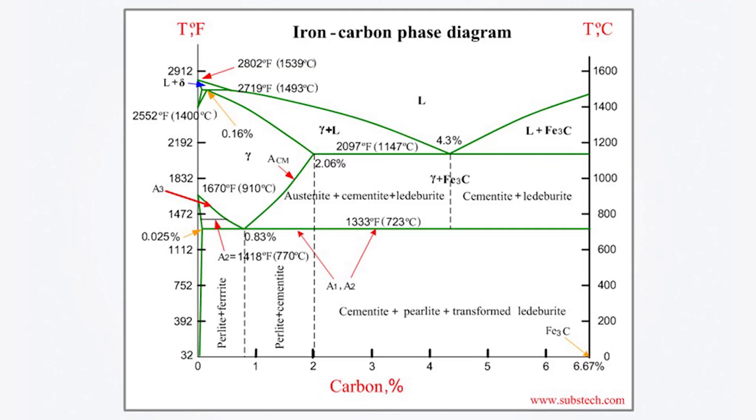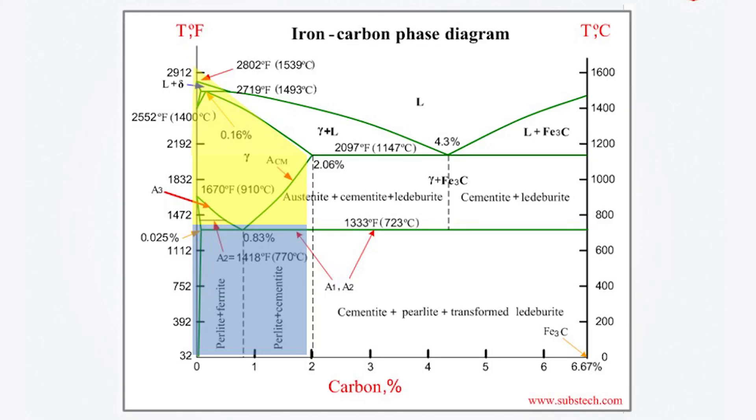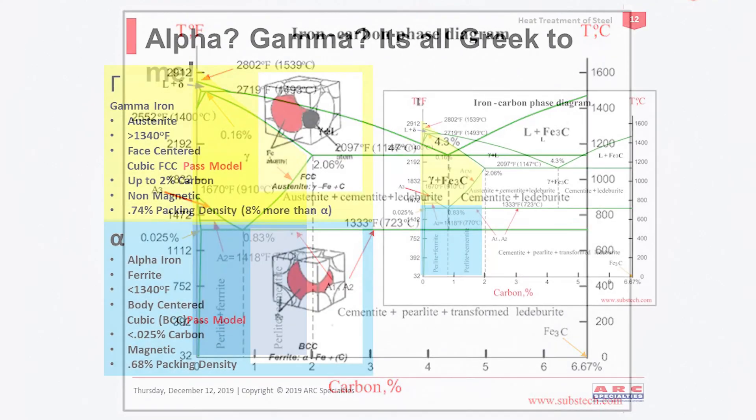This is an iron-carbon phase diagram. Along the x-axis, you have the carbon percentage, zero to about seven percent. And along the y-axis, we have temperature. What it's showing you is that at different temperatures, we have different patterns of stacking of the atoms. And just to make it a little bit easier, we're only going to work in this area down here. This is where all the steels are, zero to two percent carbon, probably even less than that. And so we're working in the yellow and the blue zones.